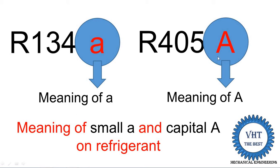In some refrigerants like R405A and R410A, capital 'A' is written beside the name. We are not able to write capital 'A' behind R134a because for isomers, small 'a' is written. Small 'a' indicates it is an isomer refrigerant.